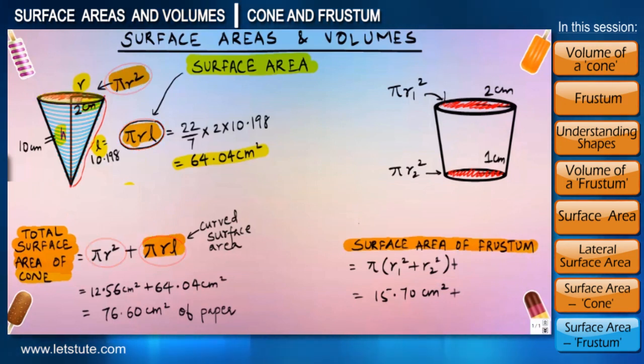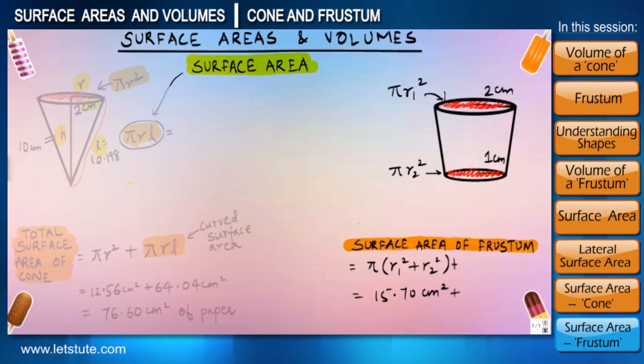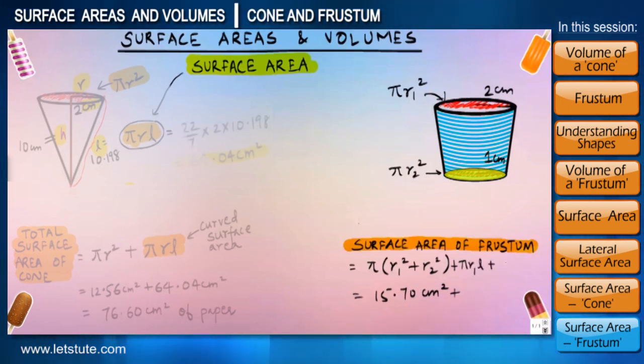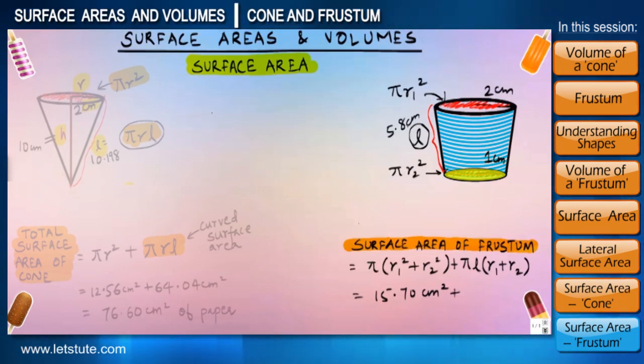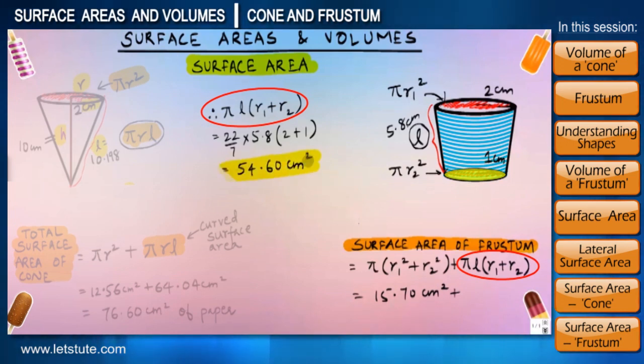Now talking about the cup or the frustum, the curved surface doesn't get tapered completely but it ends with a circular base. Since there is an additional circle involved here along with the curved surface, we'll write pi r1 l plus pi r2 l. Now even here we don't know slant height for the cup, so mathematics helps us with even that by using Pythagoras theorem, and the slant height for the cup we'll get is 5.8 centimeters. Now if you substitute it in the formula for curved surface, we'll get 54.60 centimeter square.